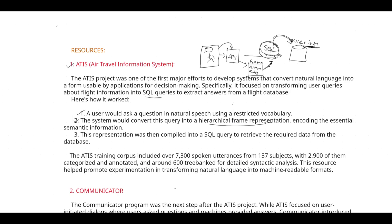After the frame is created, it is compiled into an SQL query to retrieve the required data from the flight information database. The ATIS corpus includes about 7,300 spoken utterances, of which around 2,900 are categorized and annotated, and about 600 were tree-banked — meaning syntactic details are recorded in a tree bank. This is how ATIS uses meaning representation to understand user queries.